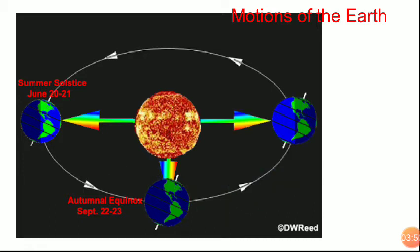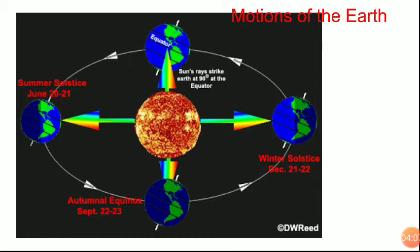Now, at this position, the southern hemisphere is facing the sun. So the southern hemisphere will have summer and the northern hemisphere will have winter. And this is the time of December 21st to 22nd. And this is again the position when both hemispheres receive equal amounts of sunlight. And this is the time of vernal equinox, March 21st and 22nd in the northern hemisphere.